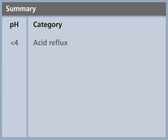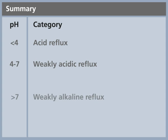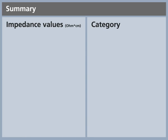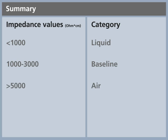A reflux with a pH below 4 is called an acid reflux. Between 4 and 7, a weakly acidic reflux, and above 7, a weakly alkaline reflux. An impedance value below 1,000 is liquid. Between 1,000 and 3,000, it is a baseline value, and above 5,000 is air. These are estimations.